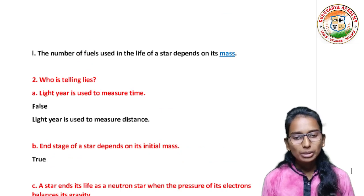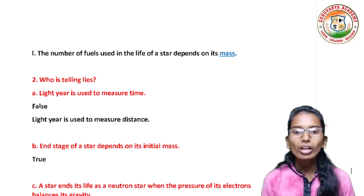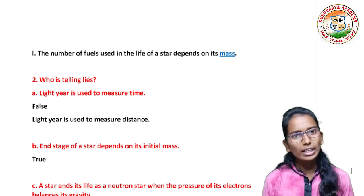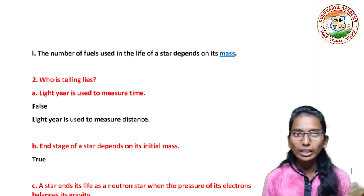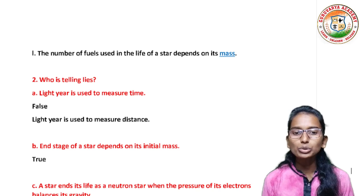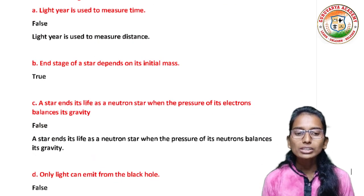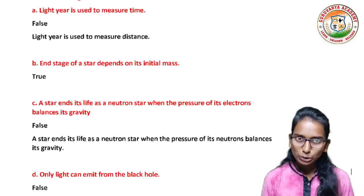Next, the true-false section — who is telling lies? First statement: light year is used to measure distance. This is false — the correct answer is that light year is used to measure distance. Second: end stage of a star depends on its initial mass. This statement is true.